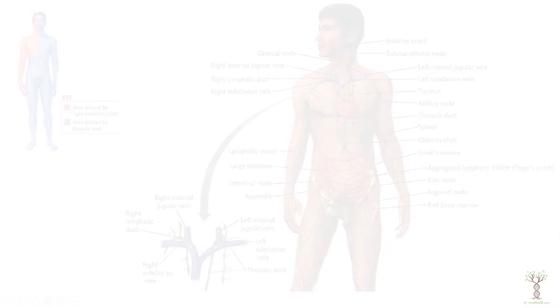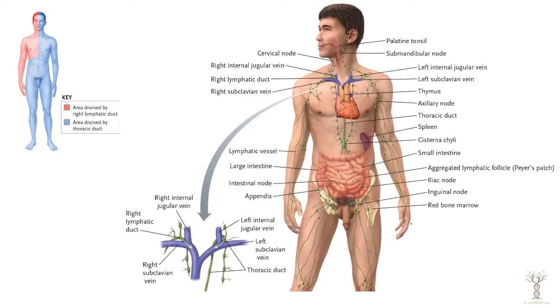In this video we're going to look at an overview of the various structures that are part of the lymphatic or the immune system and what their main functions are. In this diagram I want to point out a few structures that are important for the lymphatic system and the immune system.